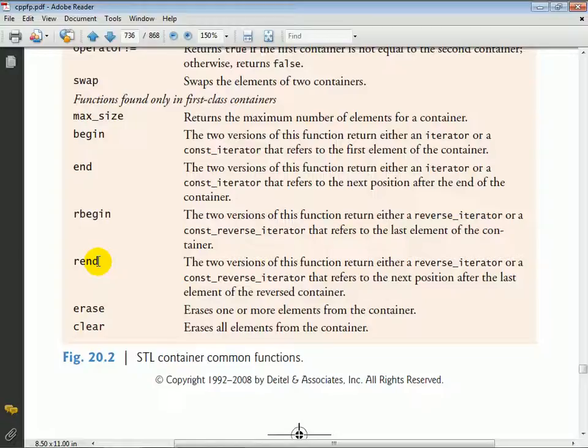Rbegin and rend are the reverse of those two. Rbegin basically points to the last element in the container and rend points to one position prior to the first element in the container. We will typically be using these in our looping data structures to help us iterate through the contents of a container.